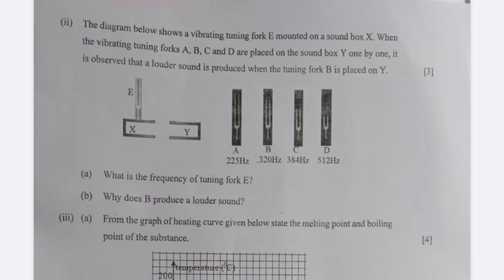Then you have been given a particular diagram showing tuning forks. What is the frequency of tuning fork E which is placed over X? That will be 320 hertz. And then why does B produce a louder sound? That's because of resonance and that leads to large amplitude resulting in a loud sound. Because the natural frequency of E and B are equal, so there is maximum energy absorption and that leads to large amplitude resulting in a loud sound.